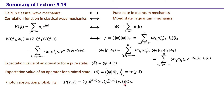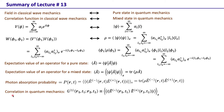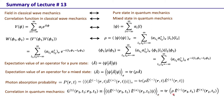Just as photon absorption probability is analogous to intensity, we also have correlation in quantum mechanics represented by the G⁽¹⁾ function. This represents the correlation in the field between field points at (r₁,t₁) and (r₂,t₂), calculated using the negative and positive frequency parts of the field at those points.